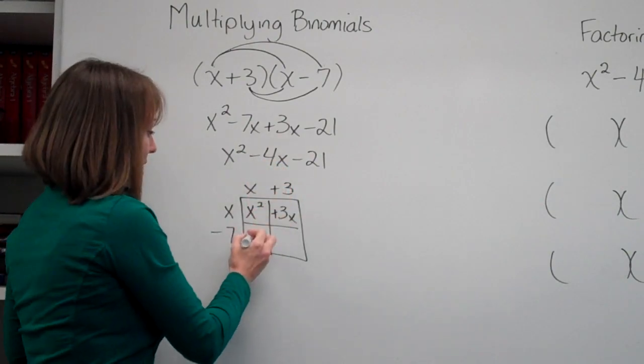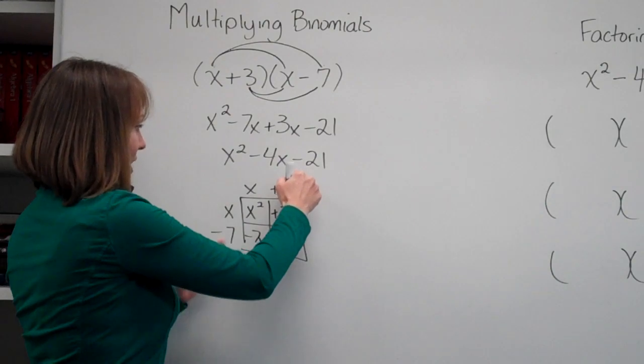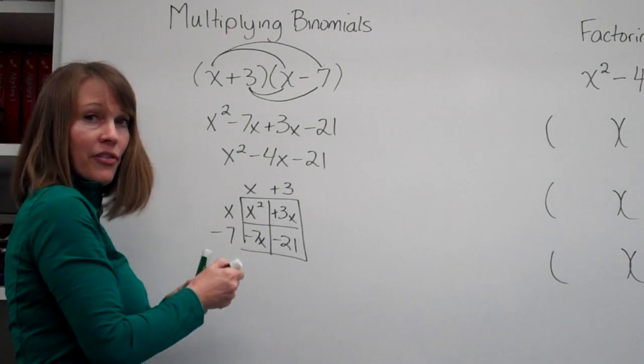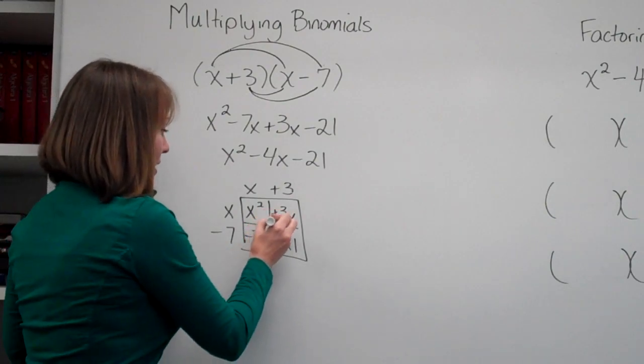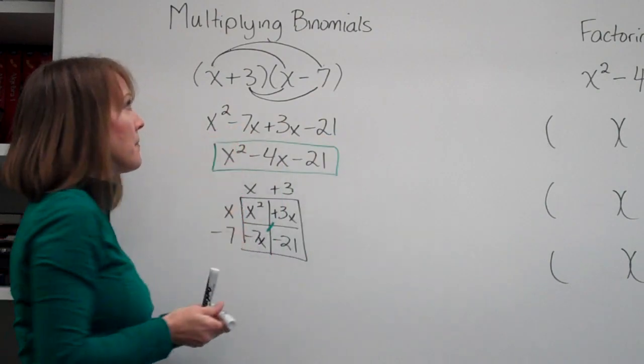x times negative 7 was negative 7x, and negative 7 times 3 would be negative 21. We get the same terms and we simplify the like terms and combine them to get this.